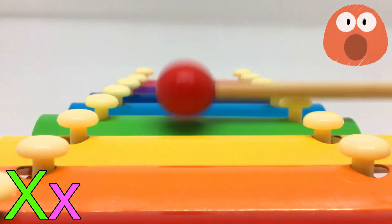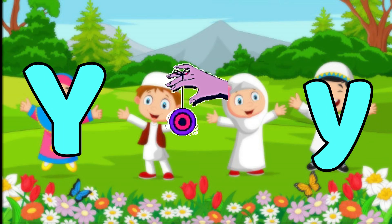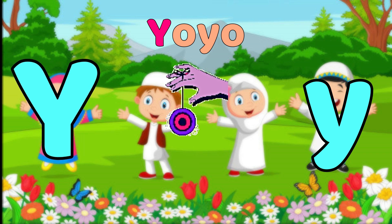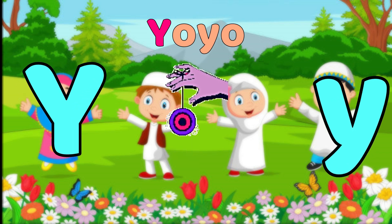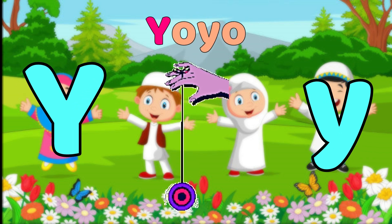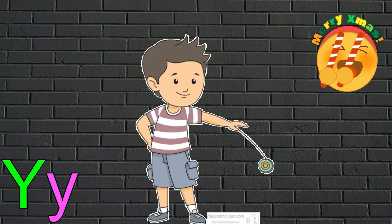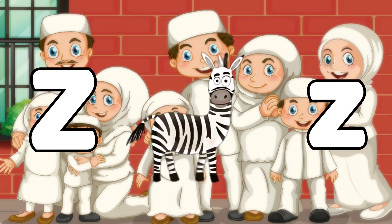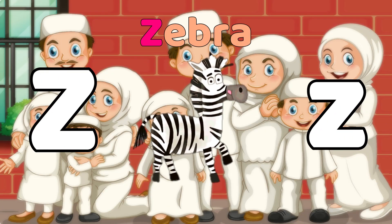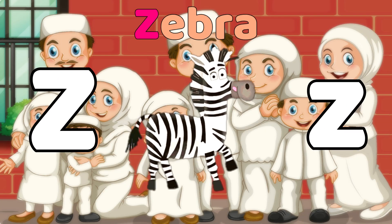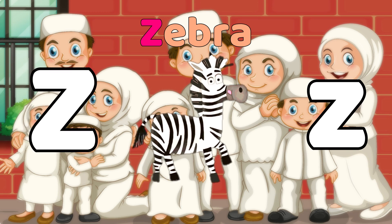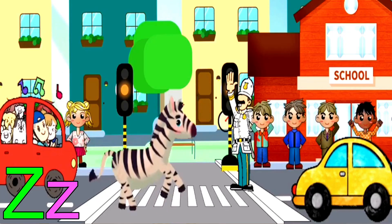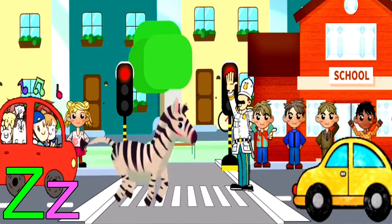Y is for Yo-yo. Y, Yo-yo, Y, Yo-yo, Y. Yo-yo. Z is for Zebra. Z, Zebra, Z, Zebra, Z. Zebra.